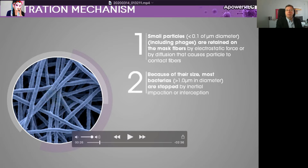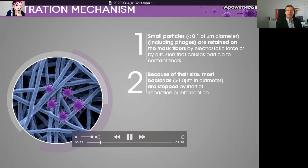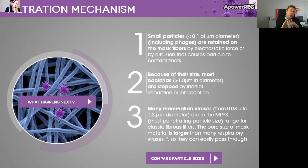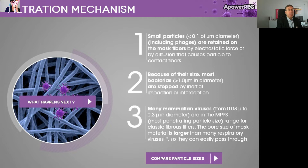Then of course we have the bigger particles, which are like bacteria, dust, fungus, spores, which due to their size, mechanically they don't fit to pass through. And then we have other particles which have a size called in the filter industry the 'most penetrating particle size.' These fit to pass through — they are heavy enough and big enough not to be attracted by electrostatic forces, and they are not doing the Brownian moves. Sometimes they will pass through; sometimes due to random position, impaction will hit the fibers and they will not pass through. Unfortunately, viruses are in this category — this most penetrating particle size.